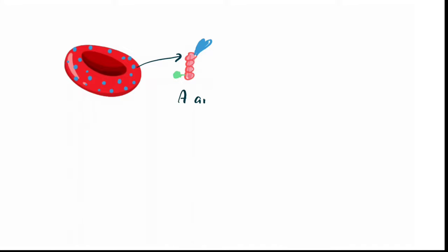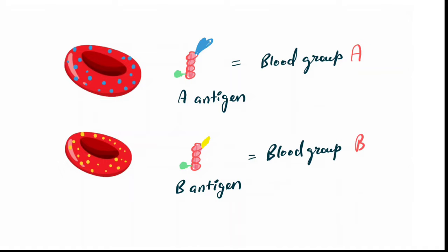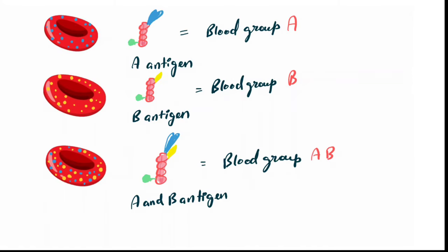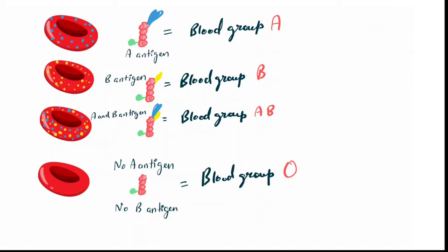Blood group A has a special type of protein known as agglutinogen, which is antigen A. If your RBC has antigen A, your blood belongs to blood group A. If your RBC has antigen B, your blood belongs to blood group B. If your RBC has both antigen A and B, your blood belongs to blood group AB. And if your RBC does not have any antigen A or B, your blood belongs to blood group O.